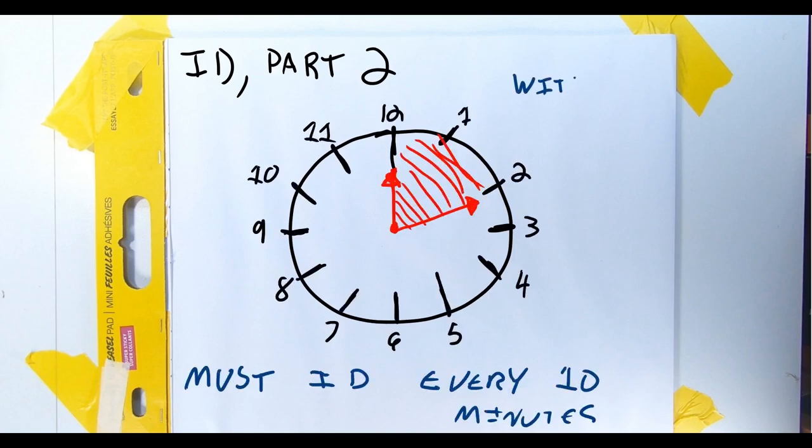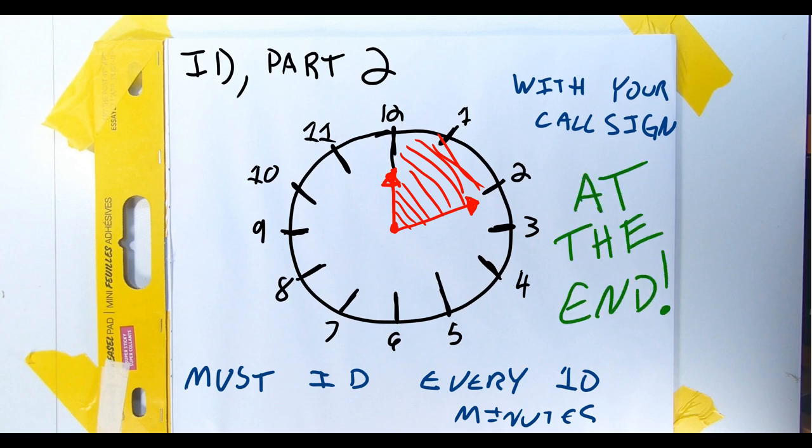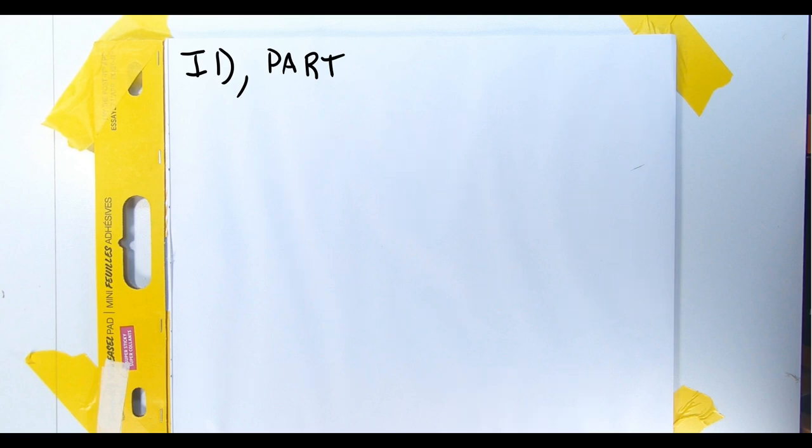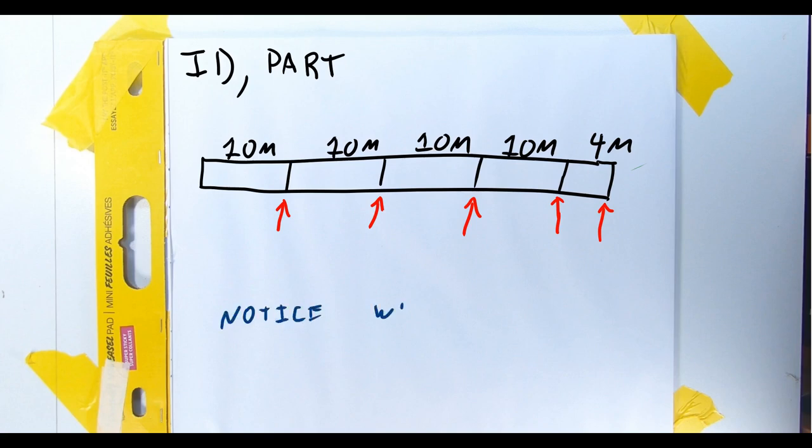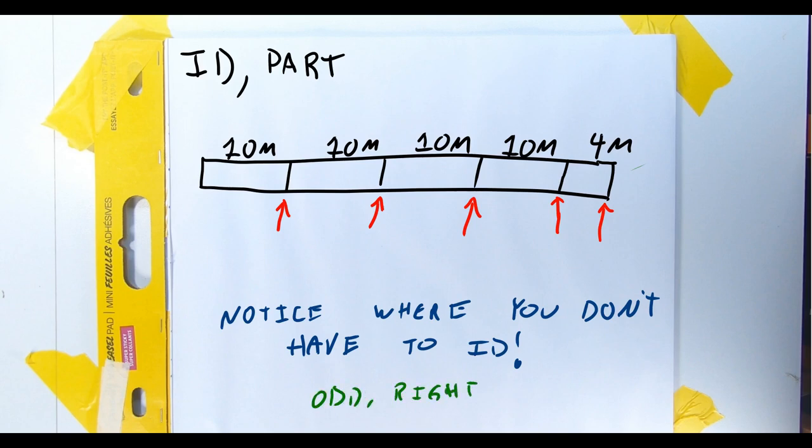And we also have to identify at the end of our transmissions. So let's say you're having a conversation over the radio, in amateur radio parlance that's a QSO, for about 44 minutes. You identify every 10 minutes, and then right at the very end of your conversation. So ultimately, you're identifying five times. Did you notice something odd? You don't have to identify at the beginning. You can just start talking, go for 10 minutes, and then ID, and still be legal. Weird, right? It's legal, but it's not exactly good radio practice under a lot of circumstances.